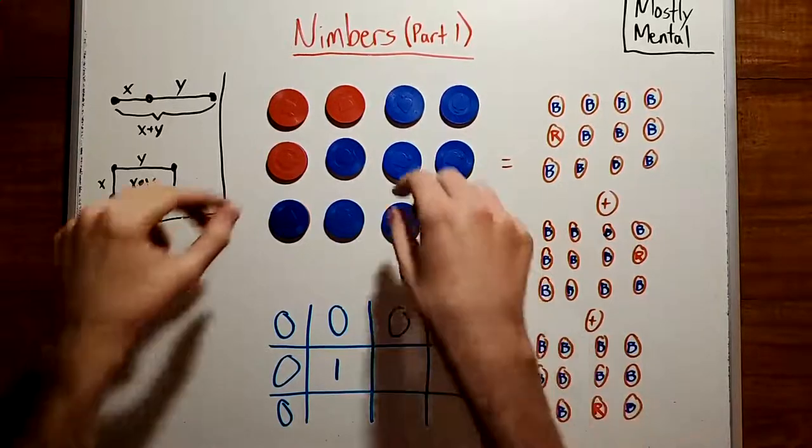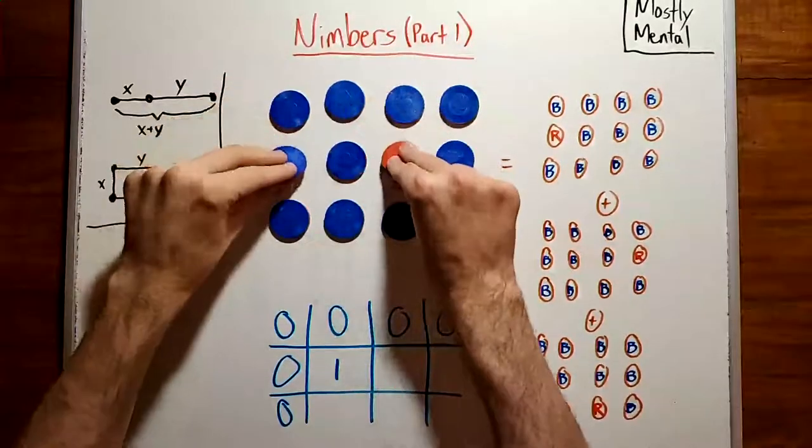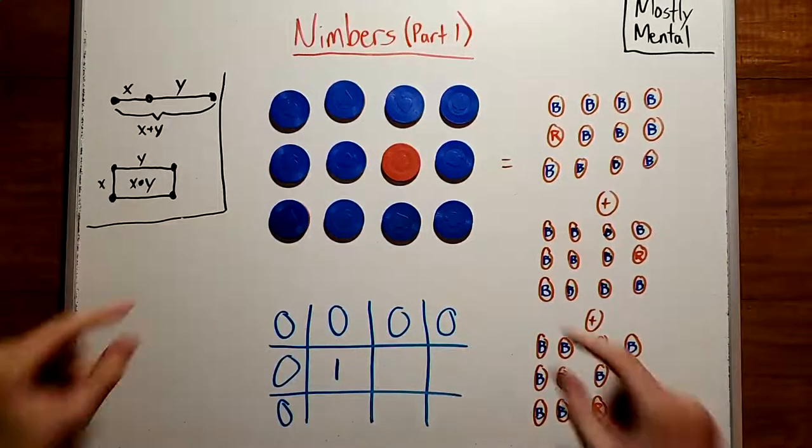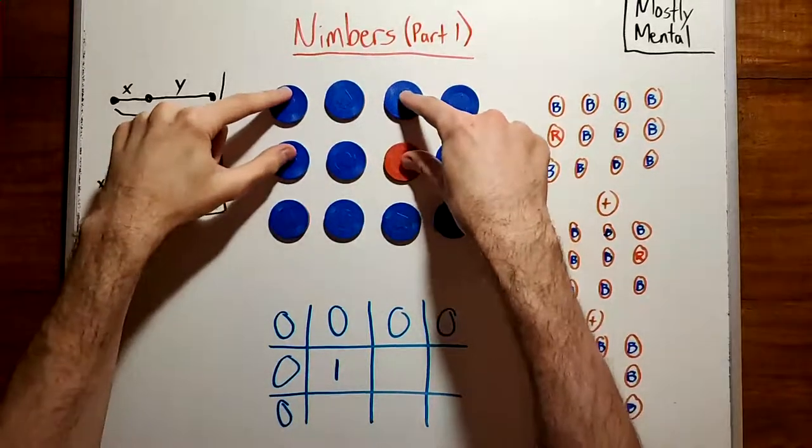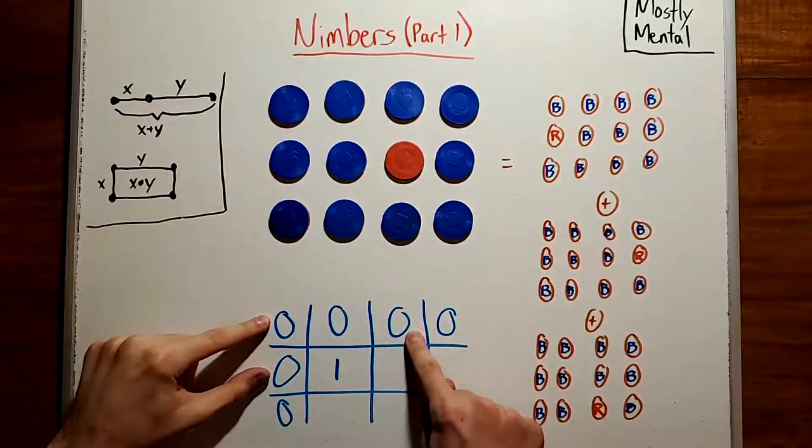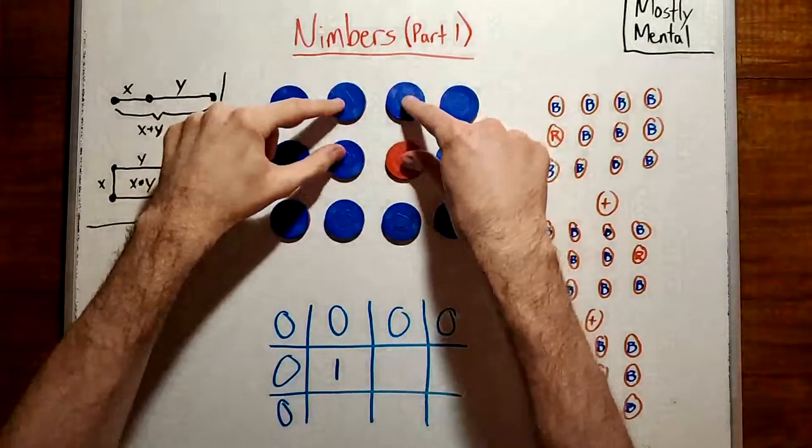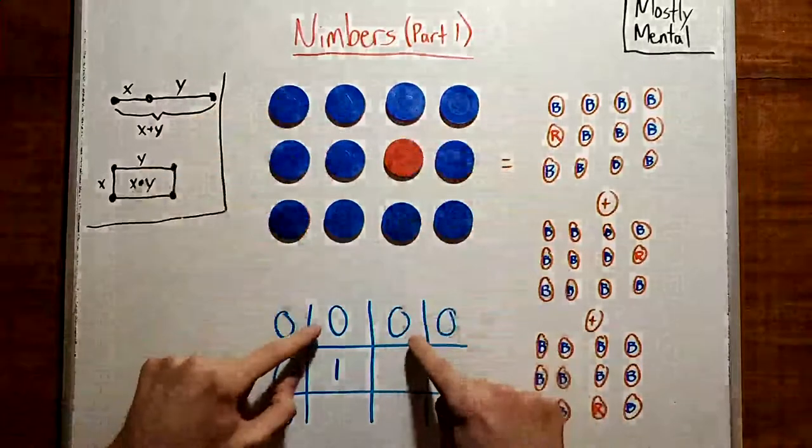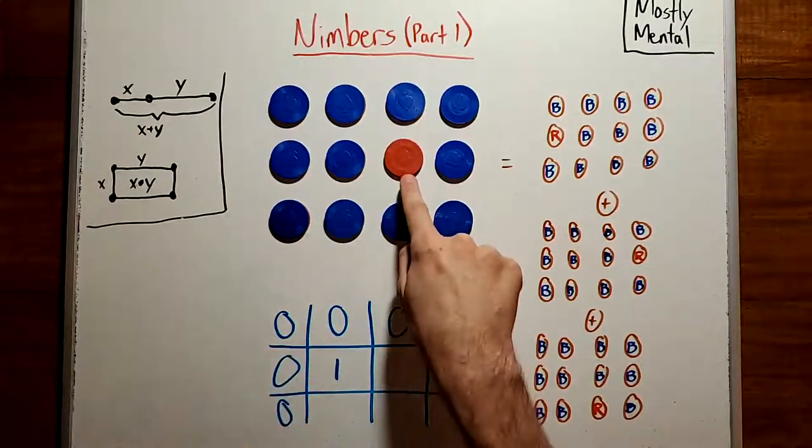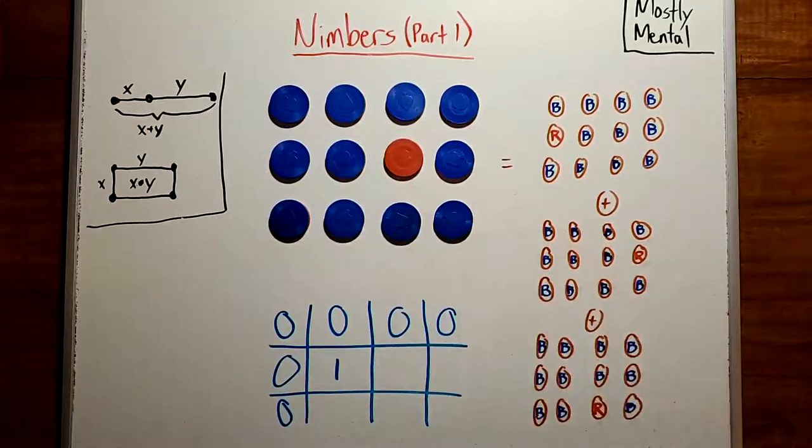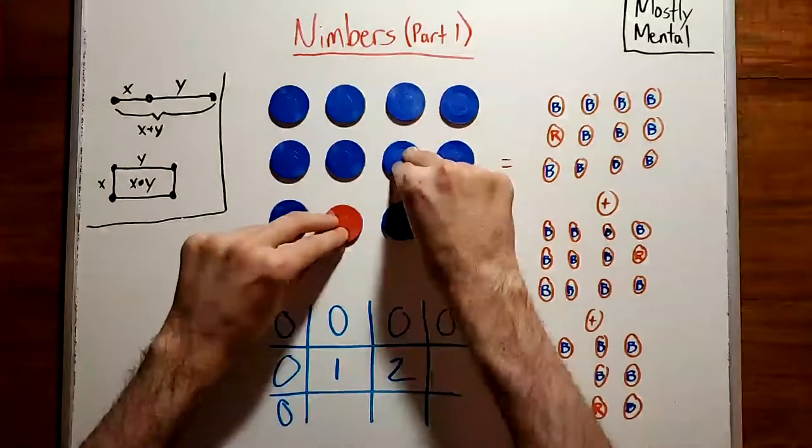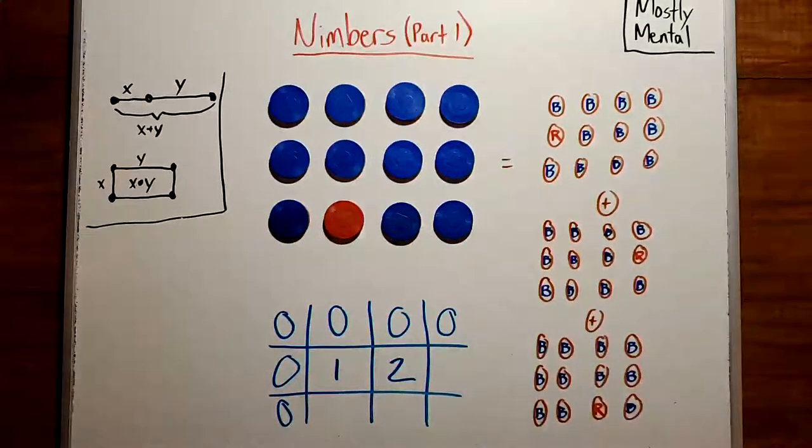Okay, what if instead we have this red coin? Well, now there are two options. We could flip over these four coins, which would give us zero plus zero plus zero, which is zero. Or we could flip over these four, which would give us zero plus zero plus one, which is one. So this position has to have value two. And by the same logic, this position will have value two as well.